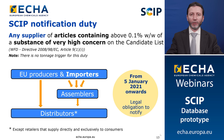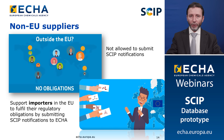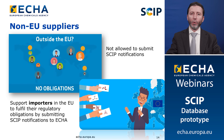However, if you are a retailer supplying articles directly and exclusively to consumers, you are exempt from the SCIP notification. Non-EU suppliers do not have the obligation to submit SCIP notifications and will not be allowed to submit any notification. However, they should support importers in the European Union to fulfill their regulatory obligations by providing the necessary information so that importers can fulfill their notification obligations.